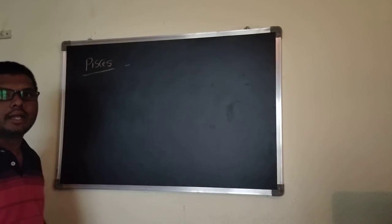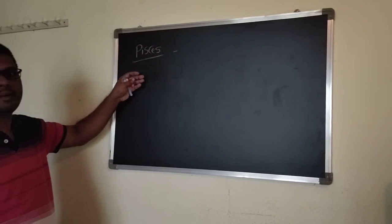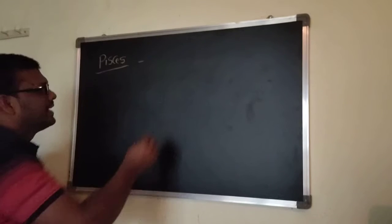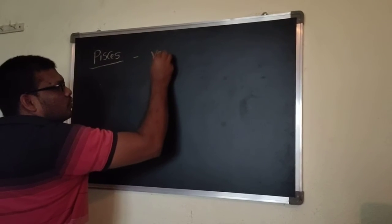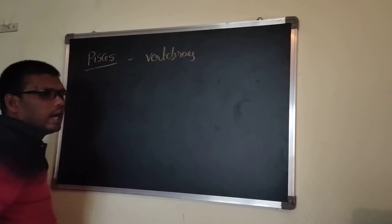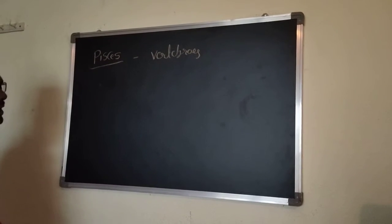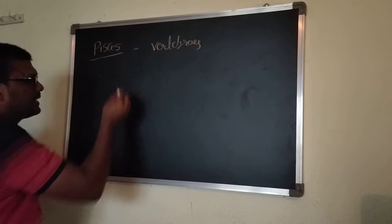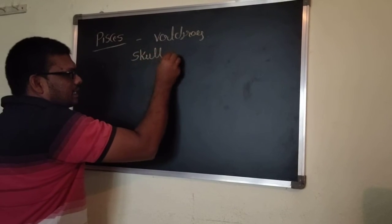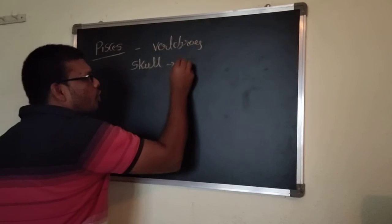Hi, good morning. Last class we discussed Pisces. In Pisces, some general characters are present. We already discussed the general characters regarding vertebrates, teeth, and the circulatory system. One other thing is the skull. Here, the skull is monocondylic.